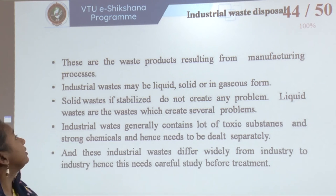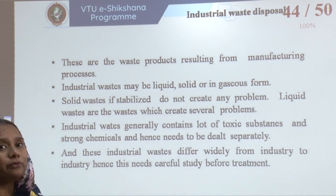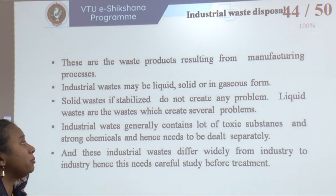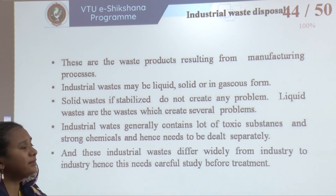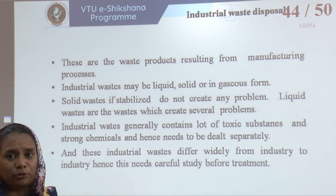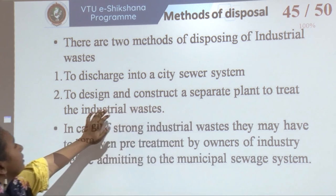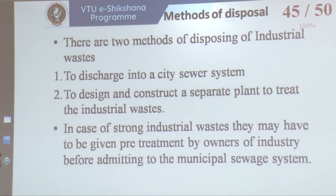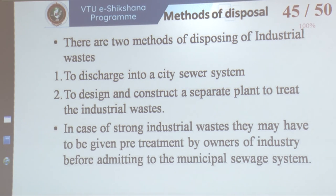Industrial waste results from manufacturing processes and could be solid, liquid, or gaseous. Solid waste if stabilized does not create major problems, but liquid waste creates a lot of problems. Industrial waste generally contains toxic substances and strong chemicals, so it must be dealt with separately — industrial waste differs widely from industry to industry and careful study should be made for treatment. There are two disposal methods: one is to discharge it into the city sewer system, and the second is to design and construct a separate plant for treating the industrial waste. In case of strong industrial waste, pre-treatment by the industry owners may be required before admitting it into the municipal sewage system.